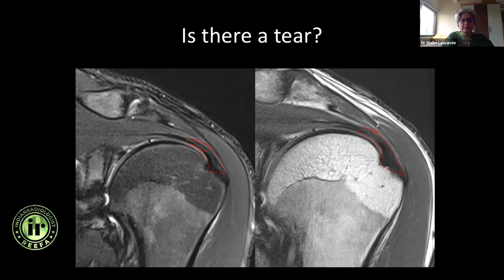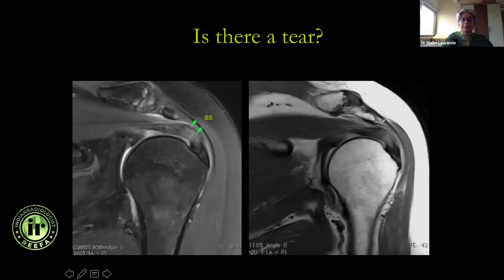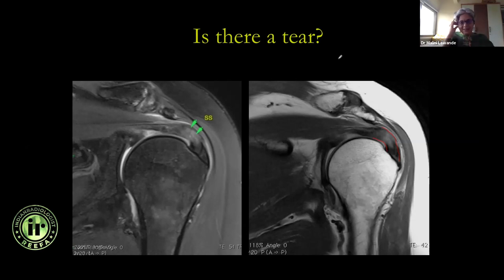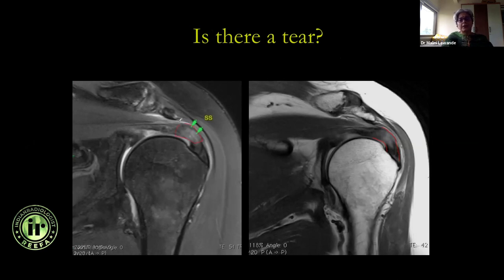If I call it minimal or mild critical zone tendinosis, nothing changes — it's not something that's going to need surgical management. Now this tendon looks abnormal for sure: it is thickened significantly and showing bright signal, it's no longer dark. But is it a tear? No, it's tendinosis. The correct term is tendinosis or tendinopathy — we do not use tendinitis because there is no inflammation. You want to say whether it is mild, moderate, severe, or advanced — here there is advanced critical zone supraspinatus tendinosis.